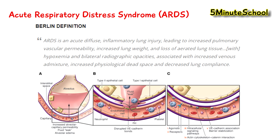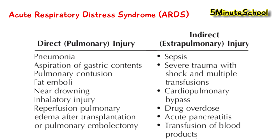It could either be a direct lung injury or an indirect extra-pulmonary injury — outside the lungs. The general consensus is that the most direct causes of ARDS are due to direct forms of lung injury, such as infection like pneumonia, or direct damage to the lung tissue — for example, accidentally inhaling gastric secretions where the acid causes damage to the lung tissue.